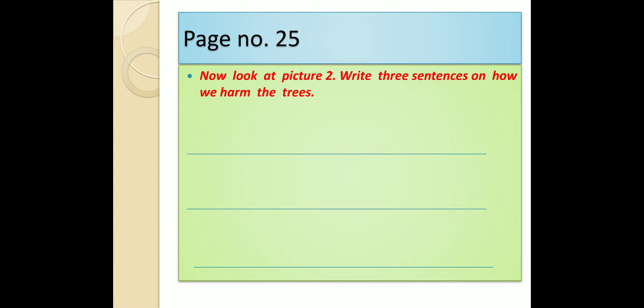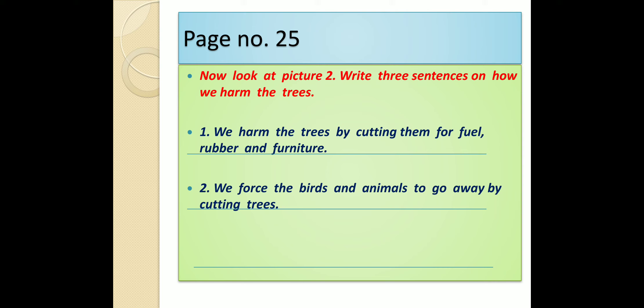Now look at picture two. Write three sentences on how we harm the trees. We harm the trees by cutting them for fuel, rubber and furniture. We force the birds and animals to go away by cutting trees. We are responsible for increasing air pollution by burning the wood.